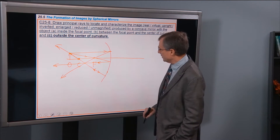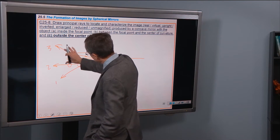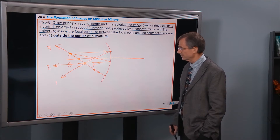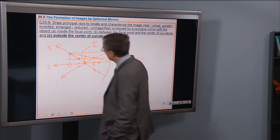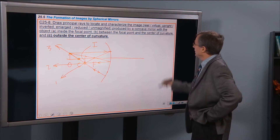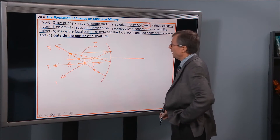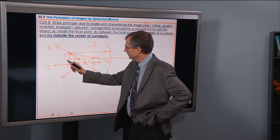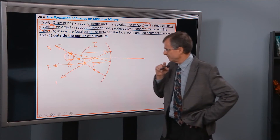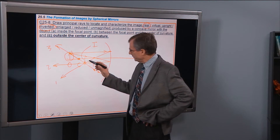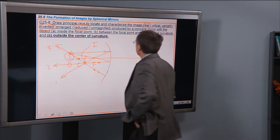So where do those three rays appear to converge? Looks like they all came pretty close — we nailed it actually. Here's the image. Tell me about that image. Real or virtual? Do the light rays pass through it? Yes, they do — it's real. Upright or inverted? Here's the object, it's above the axis; the image is below the axis, so it's inverted. Enlarged or reduced? It looks like this image is smaller than the object — it's reduced. Produced by a concave mirror.